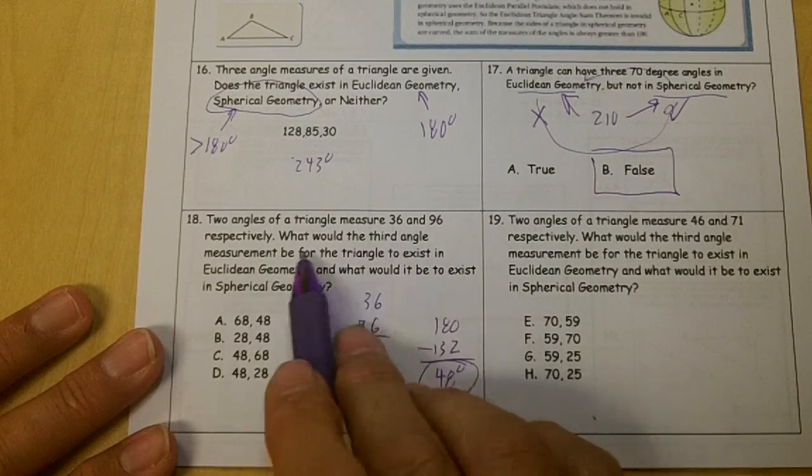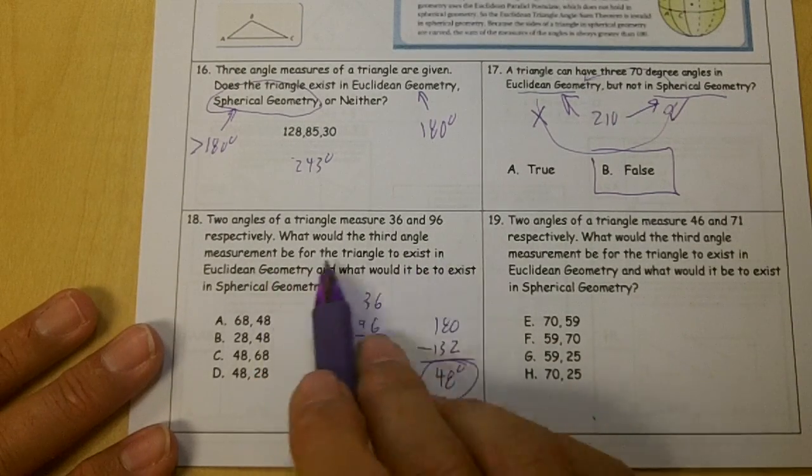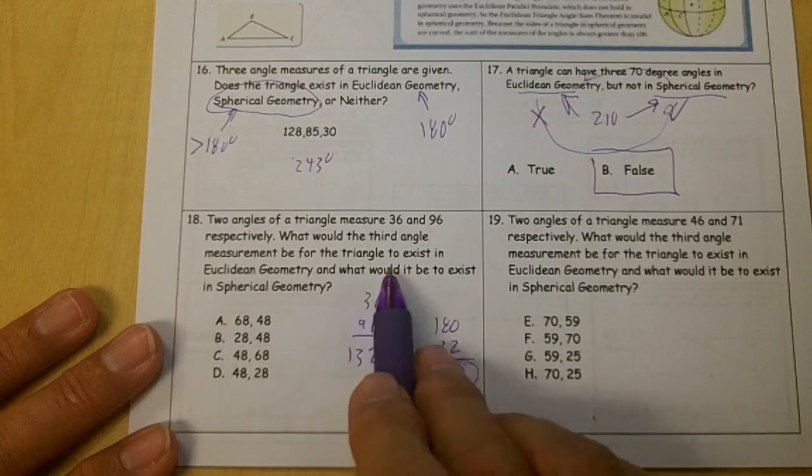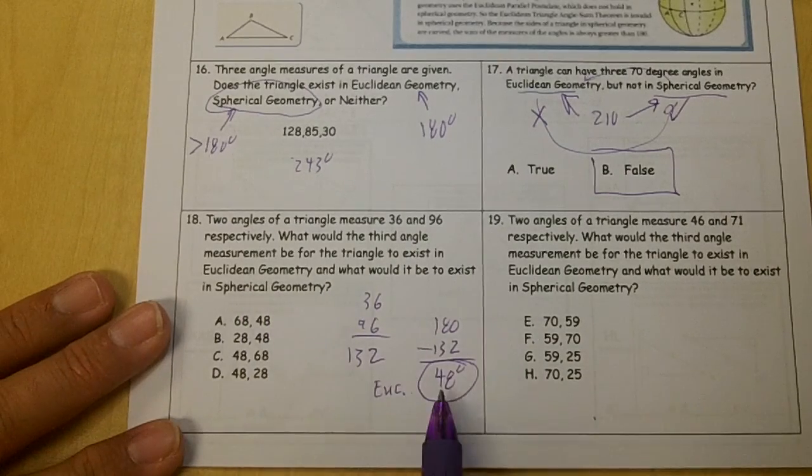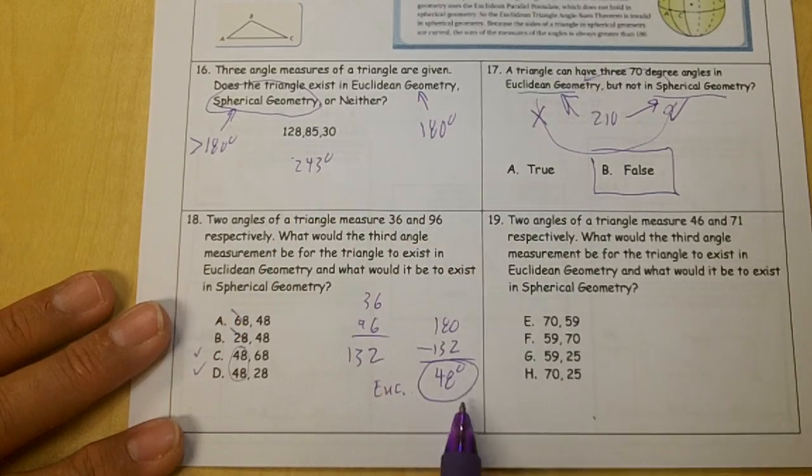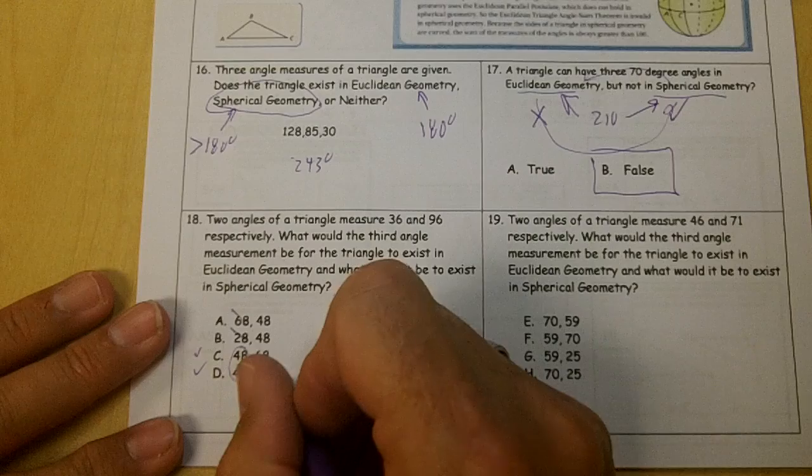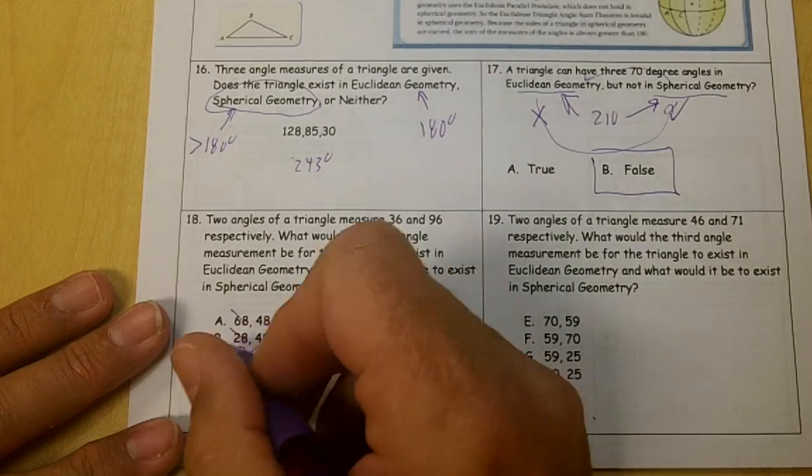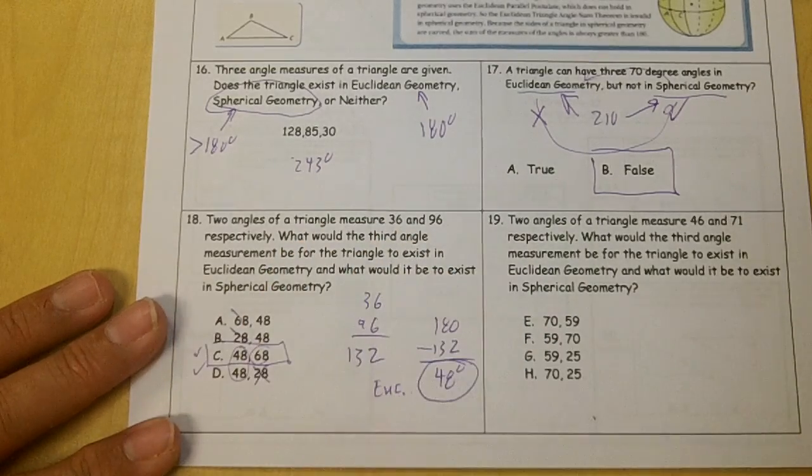Okay, what would the third angle measurement need to be for the triangle to exist in Euclidean? And what would it need to be in spherical? So this needs to be 48 in the first spot. These two work, but more than 48 in the second spot. This would be too small. This one would work, wouldn't it? So C would work.